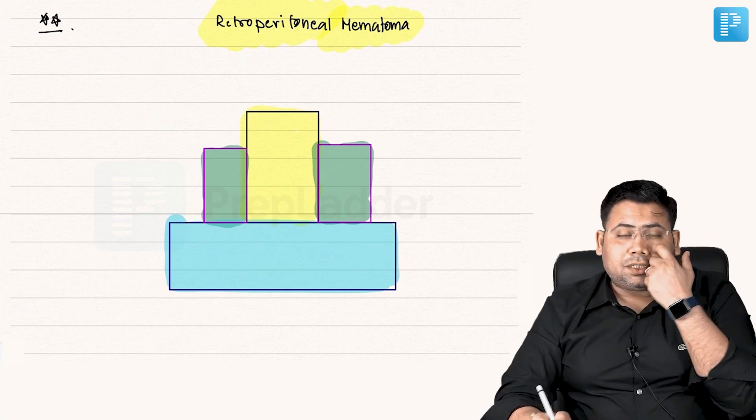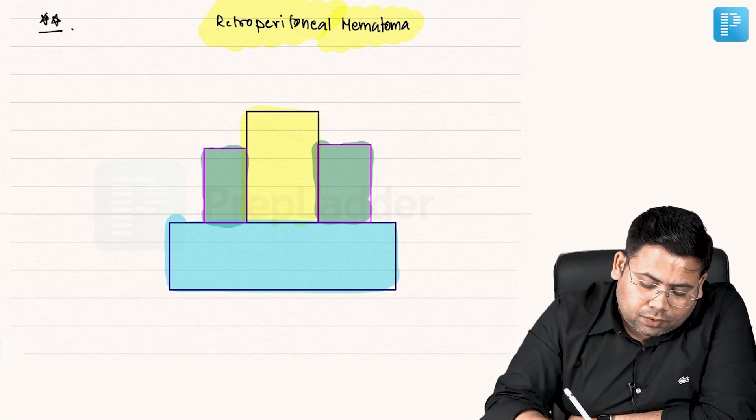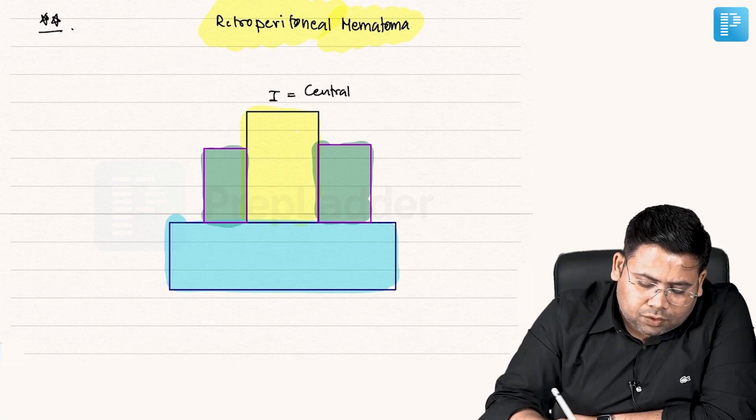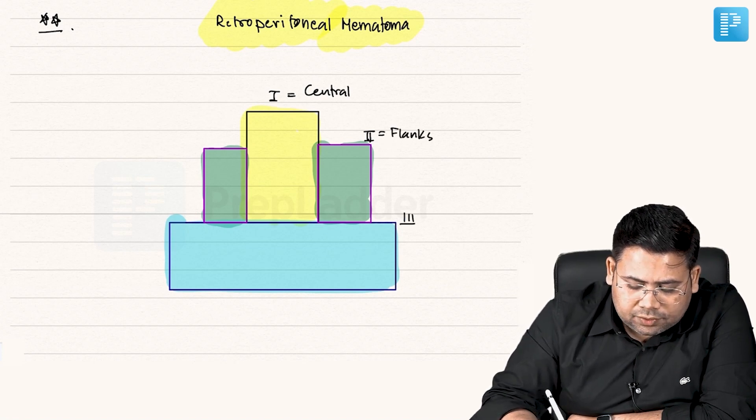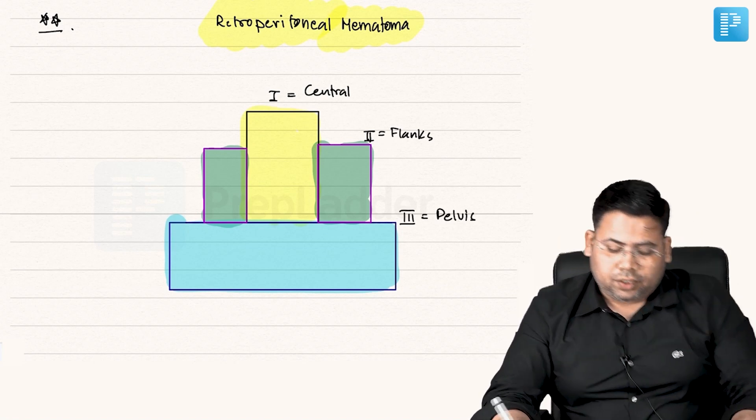Zone one is the central zone. Zone two is the zone of flanks. Zone three is the pelvis. So zone one, zone two, zone three.